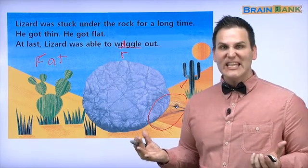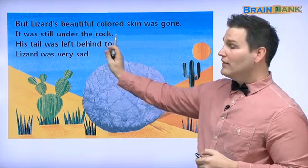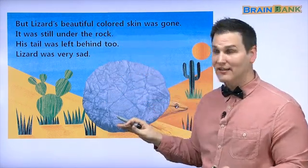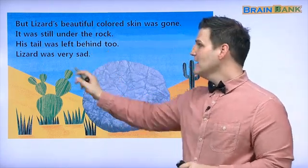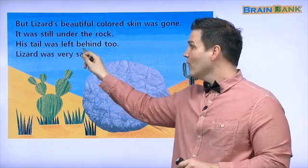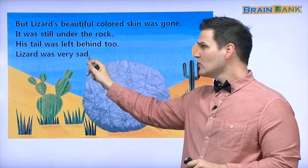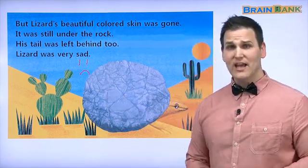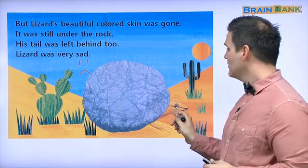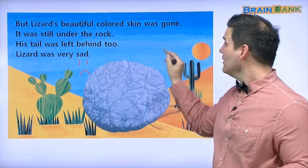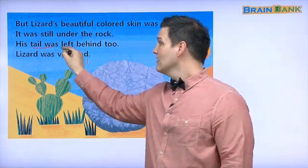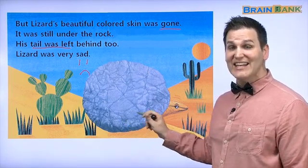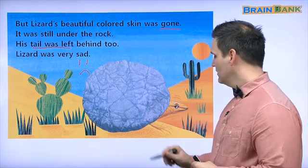Let's find out if the coyote eats him. But lizard's beautiful colored skin was gone — it was still under the rock. His tail was left behind too. Lizard was very sad. Oh no! This is lizard, very sad. Why is he sad? Because his colors are gone and he has no tail.